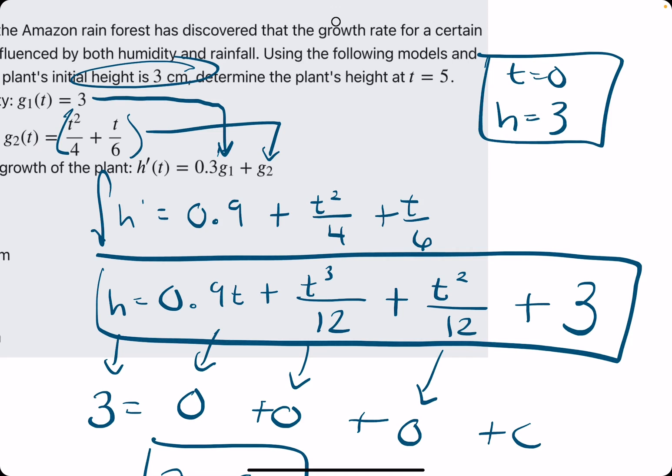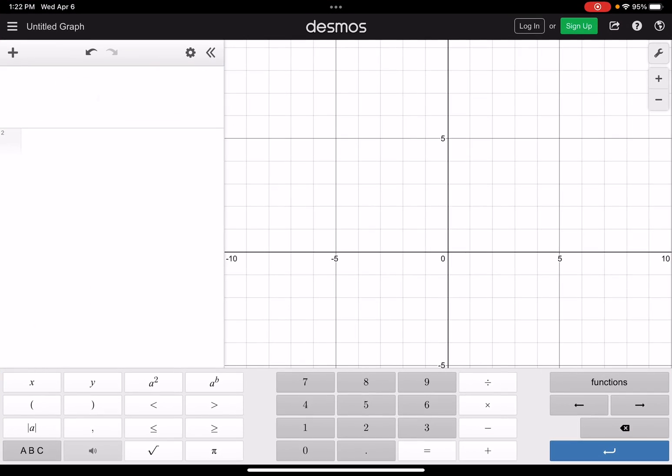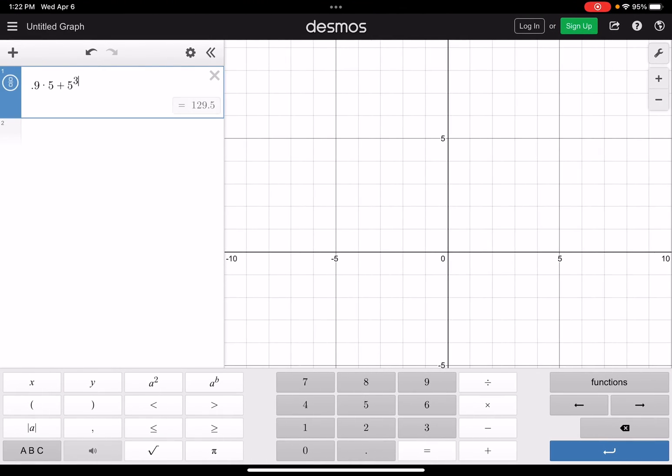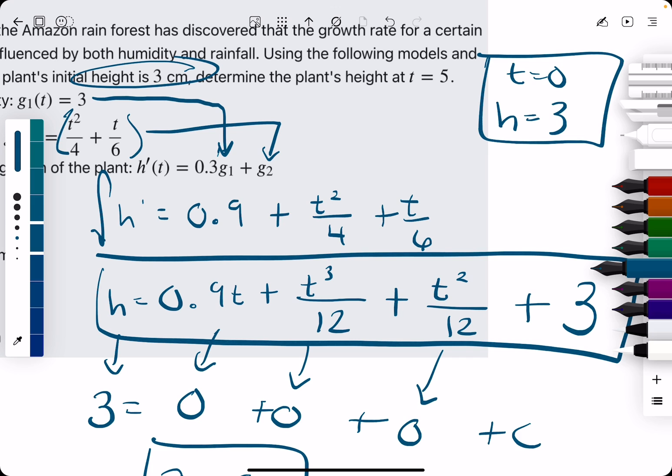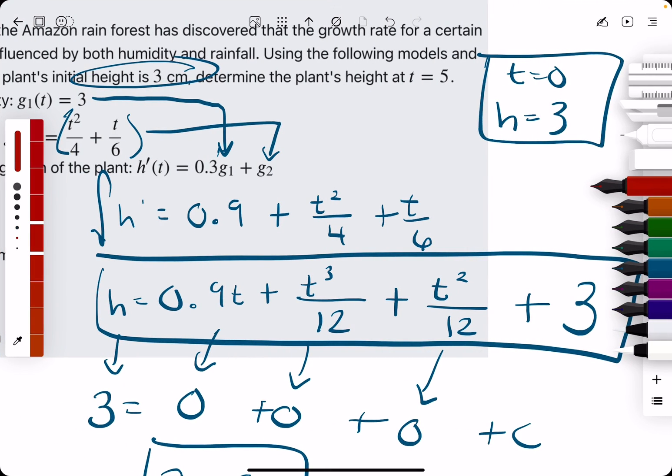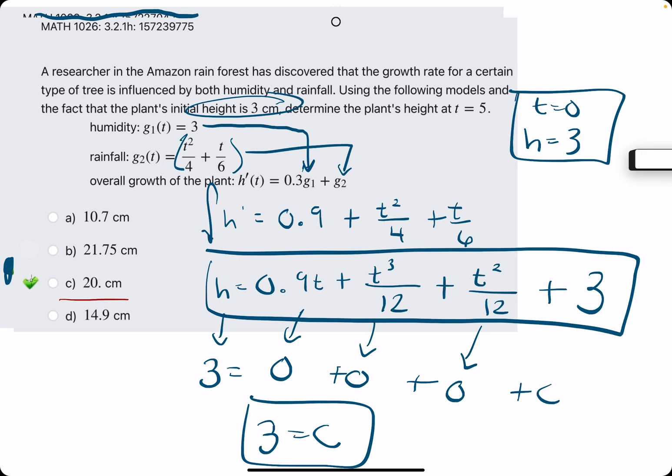Now we're plugging in 5 wherever we see t. 0.9 times 5 plus 5 cubed over 12 plus 5 squared over 12, and then I think plus 3. So we get 20 exactly. And it looks like option C is our best answer.